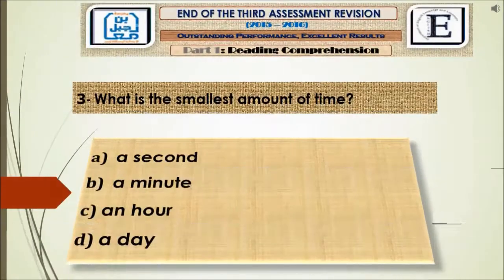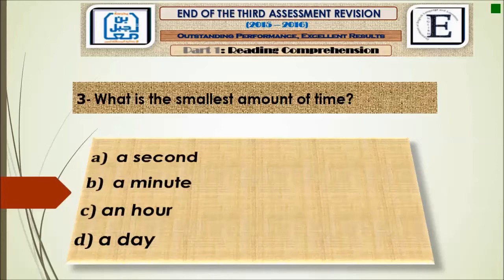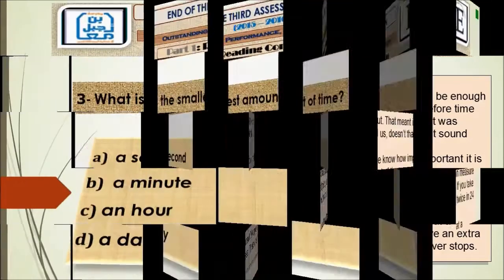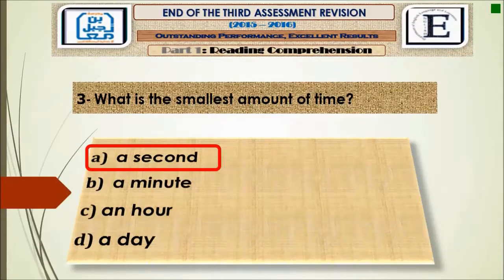Let's move to question number three: What is the smallest amount of time — a second, a minute, an hour, or a day? By scanning the text again, it's clear in the second paragraph: 'The smallest amount of time we can measure is called a second.' So the answer is a second.